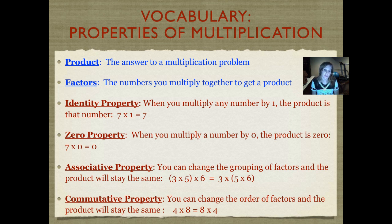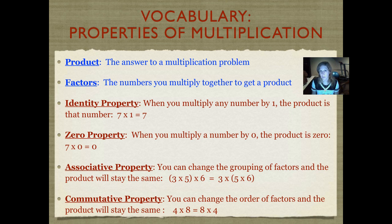The associative property is a little bit trickier to remember. It means you can change the grouping of factors and the product will stay the same. Notice in those two sets of numbers on either side of the equal sign that the numbers are in the same order — the three comes first, the five is in the middle, and the six comes last. But we've grouped them differently; we put our parentheses around different numbers. The first time we multiply the five by the three, and in the second set we multiply the five by six.